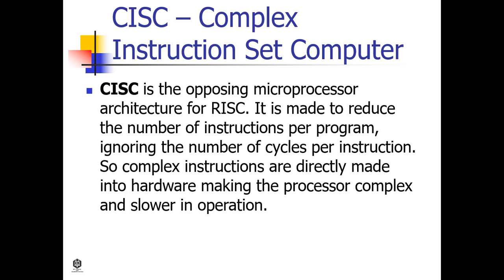CISC is the opposing microprocessor architecture to RISC. It is designed to reduce the number of instructions per program, ignoring the number of cycles per instruction. Complex instructions are built into hardware, making the processor more complex and slower in operation.